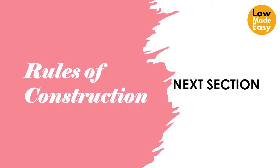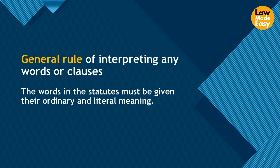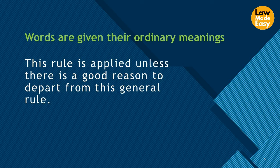We will now move on to different rules of construction. The main ones are the literal rule, the golden rule, and the mischief rule. The literal rule: the words in statutes must be given their ordinary and literal meaning — effectively, the ordinary meaning you can find in a dictionary. This is the general rule of interpreting any words or clauses within a statute. It is assumed that draftsmen have chosen words carefully and used them in their ordinary meanings. This rule is applied unless there is a good reason to depart from it.